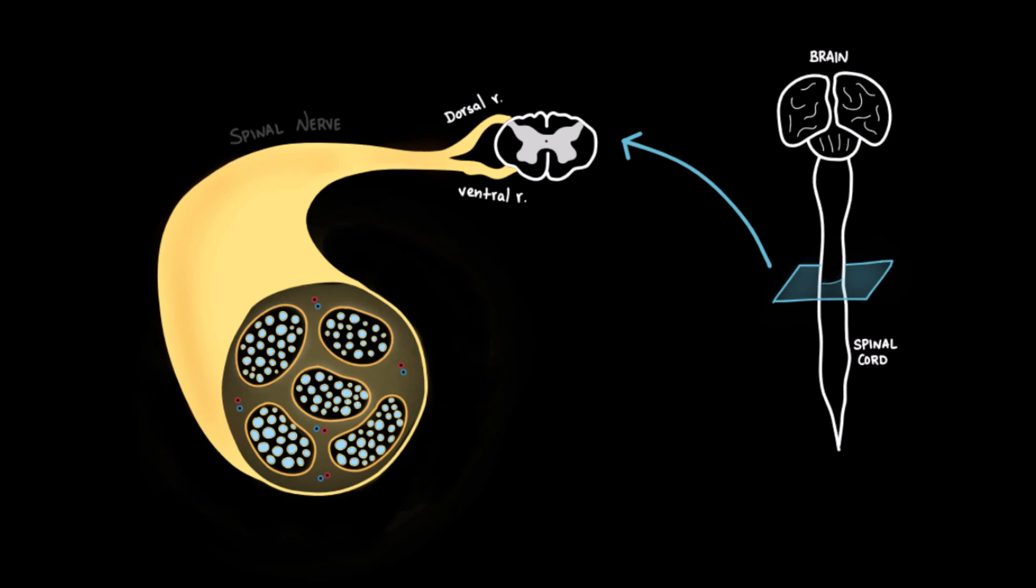These two roots join together to form the spinal nerve. That means each spinal nerve is a mixed nerve, carrying both sensory and motor signals, before branching out to innervate the skin, muscles, and internal organs.